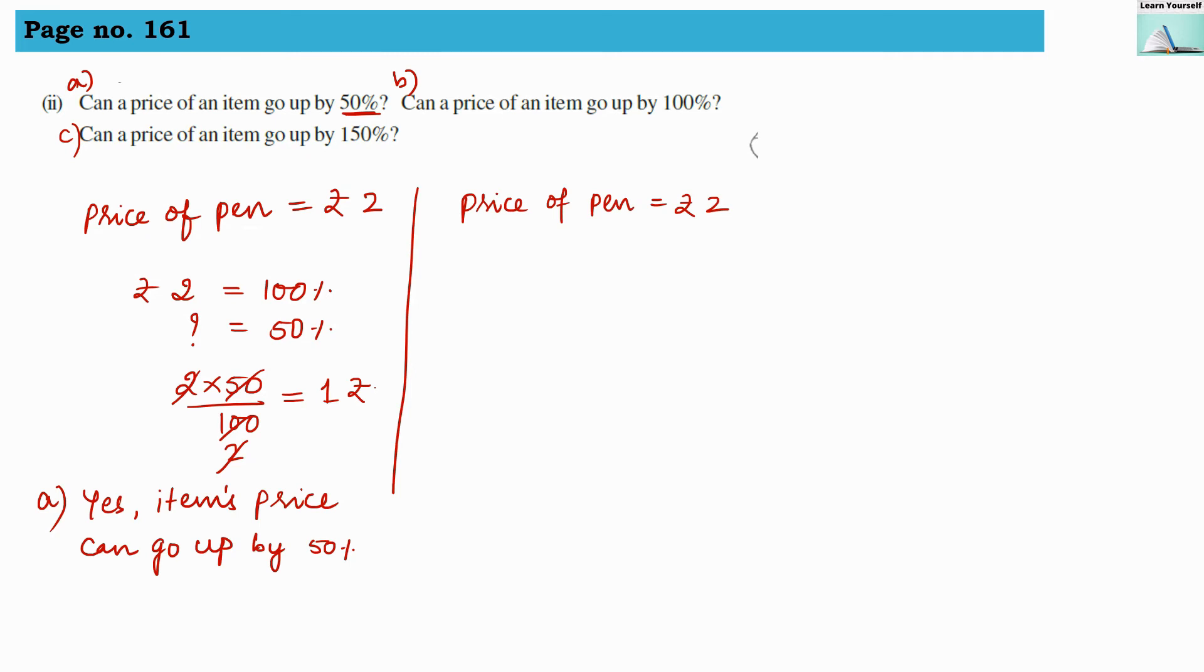Now let us see for question number 2. Can a price of item go up by 100%? If the price of pen is 2 rupees and again 2 rupees has been increased, 2 plus 2 equals to rupees 4. So price can go up to 4 rupees. So price of an item can go up by 100%. So question B is also yes.